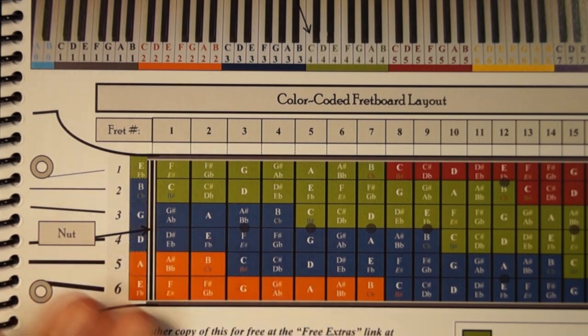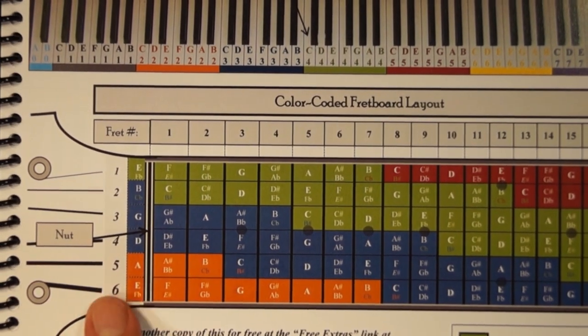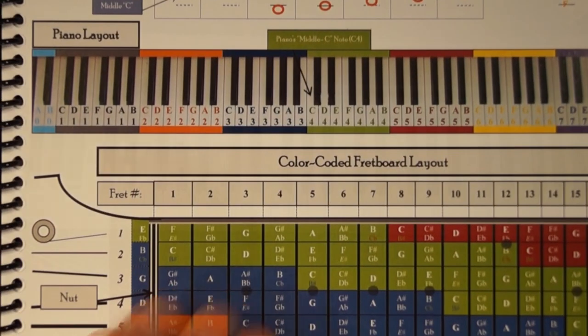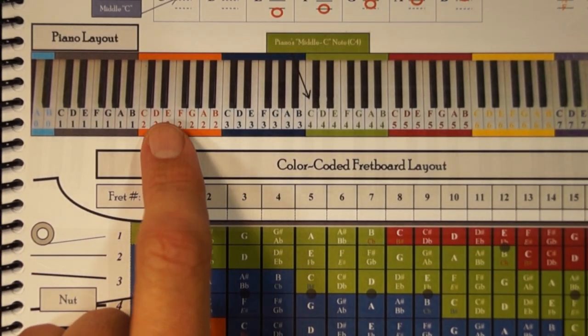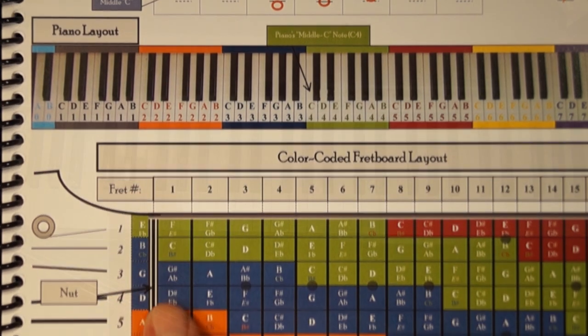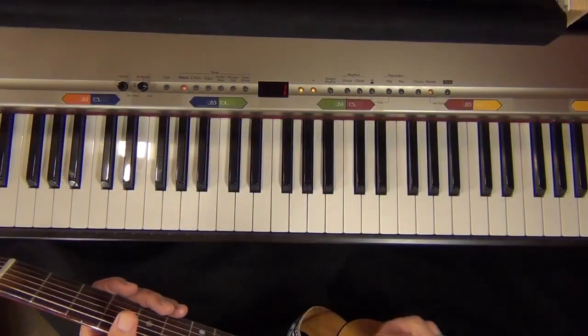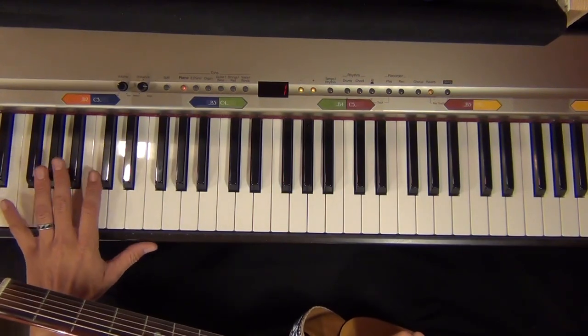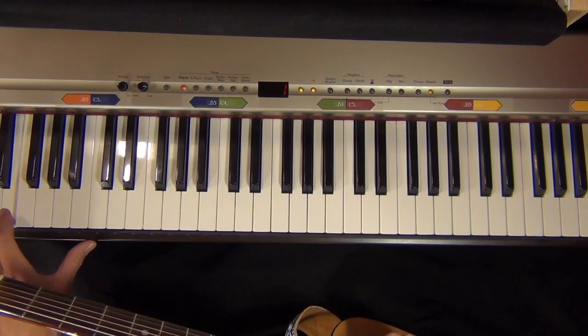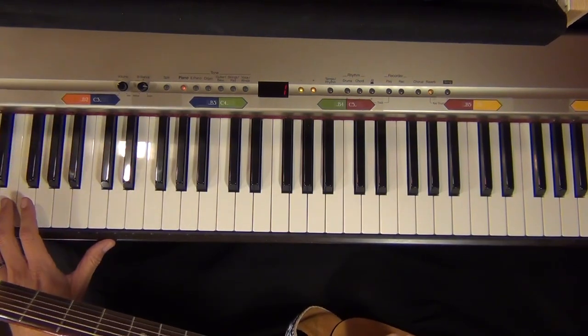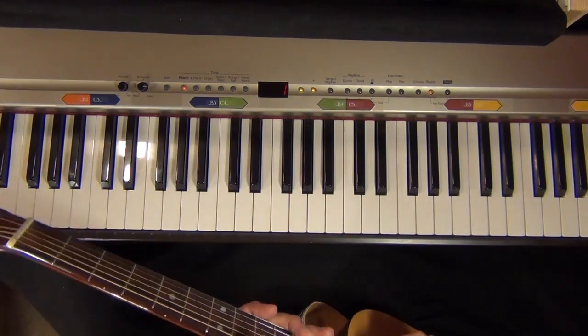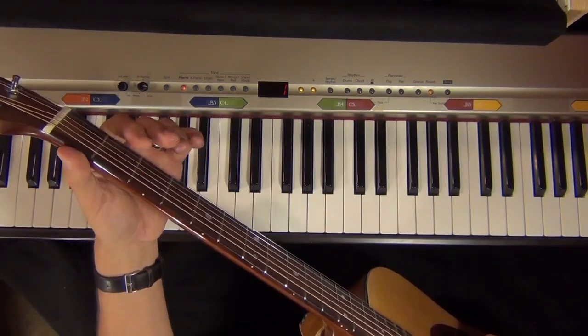If you take a look at the sixth string, the fat one here, you'll notice it's an orange E. If I look on the piano, it's called E2, an orange E, and that's going to be the same note as this E here. This is E2 on a piano, and if I play my open sixth string here, that's going to be E2.